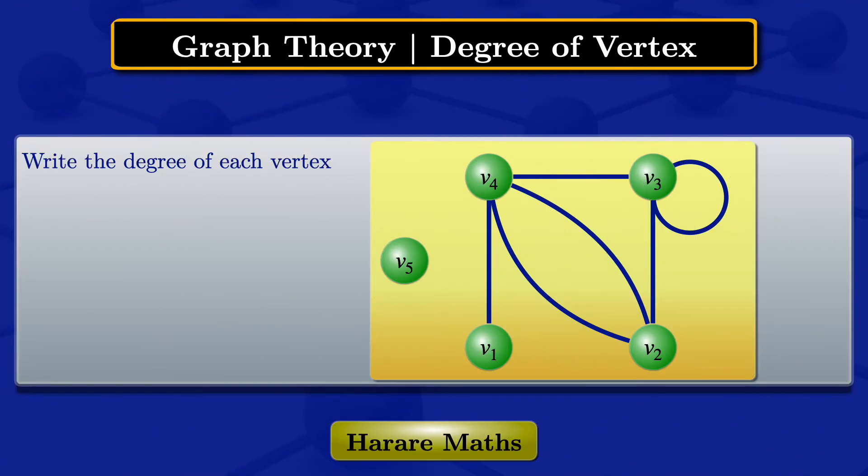Given this graph which has 5 vertices, I'm going to write the degree of each vertex.